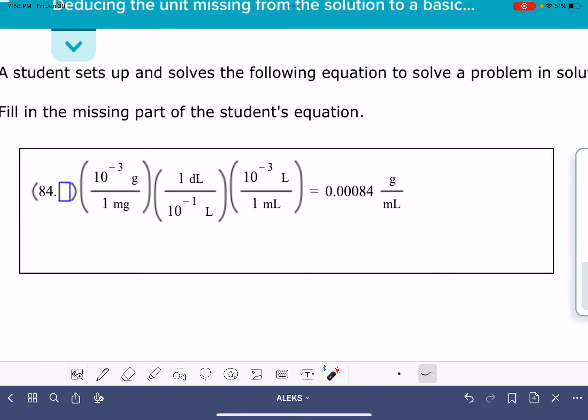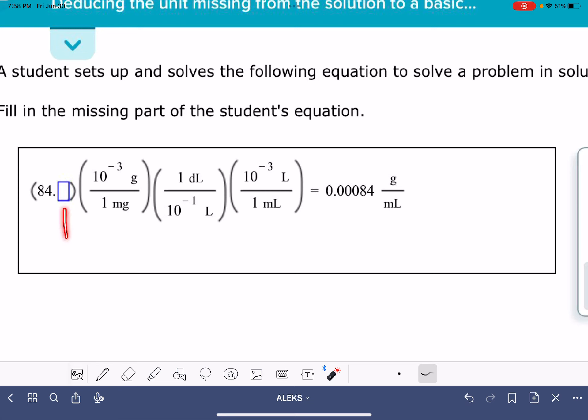So this problem has got a math equation all set up for us, and it just needs us to figure out the units that are missing from one of the numbers in the problem. Some of the versions of this problem are a fraction, so if you're looking at a fraction, that's just the one that you got. And also, the missing unit is not necessarily the first number in the problem. It could be anywhere in the problem, it could be in the middle or at the end or whatever.